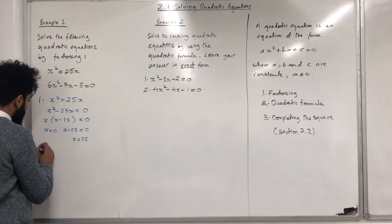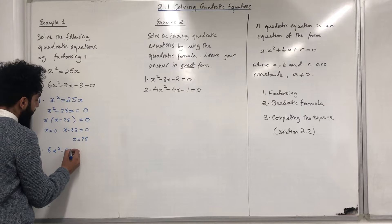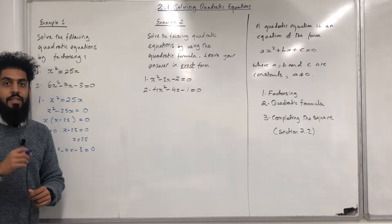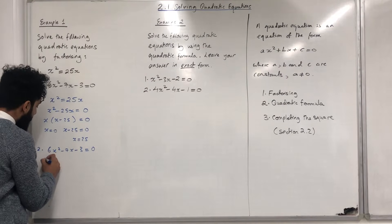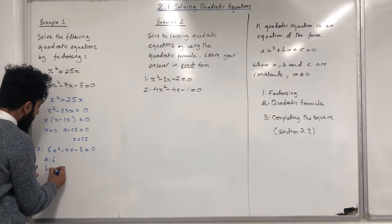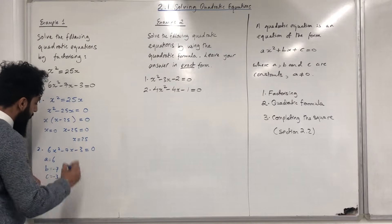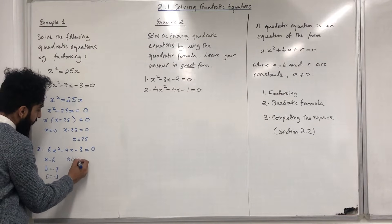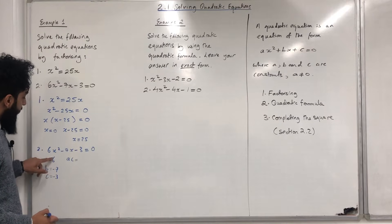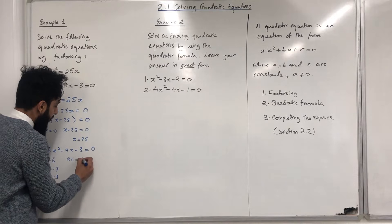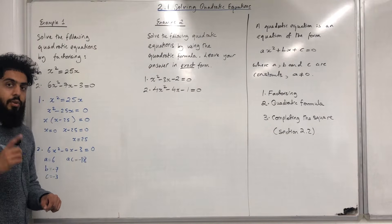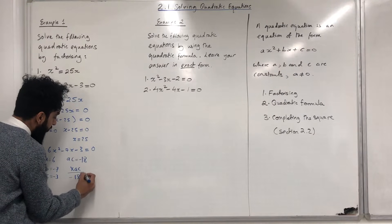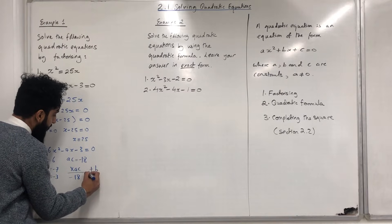Let's move on to the second equation: 6X² - 7X - 3 = 0. The first step is to state the constants A, B and C. A = 6, B = -7, C = -3. The next step is to work out AC. AC = A × C = 6 × (-3) = -18. Now we need two numbers that multiply together to give AC = -18, and add together to give B = -7.